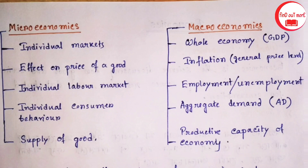Macroeconomics covers the whole economy: GDP (gross domestic product), inflation and general price level, employment and unemployment, aggregate demand, and the productive capacity of the economy.